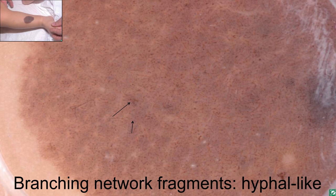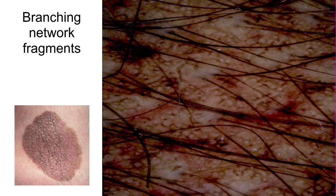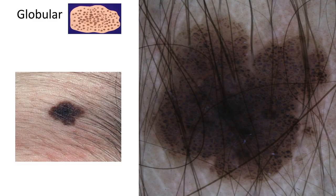A variation of the reticular pattern is the hyphal-like pattern. This is when we see branching network fragments as opposed to a well-formed network. This is also suggestive of a congenital origin. Here is another example of these branching network hyphal-like fragments.